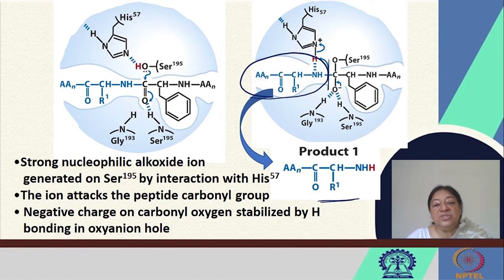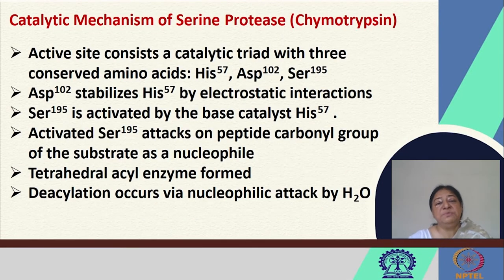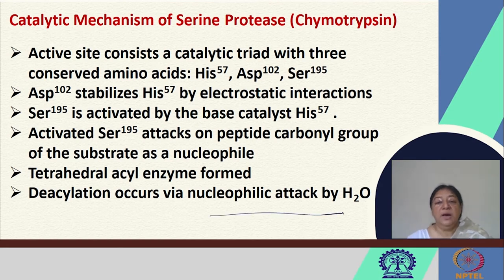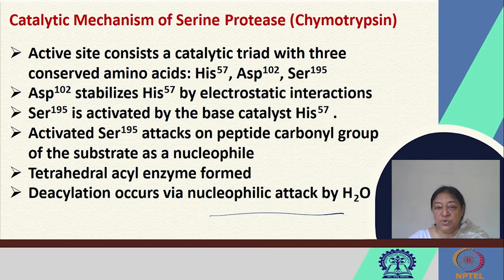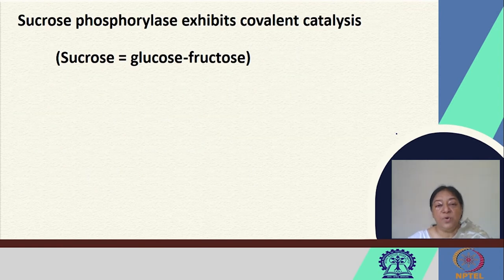The catalytic triad highlights the importance of orientation, connection, and acid-base catalysis. In covalent catalysis, a covalent linkage is formed and subsequently broken — brought about by hydrolysis or attack by water. The active site of the serine protease chymotrypsin has a catalytic triad of histidine-57, aspartate-102, and serine-195, each with their own roles to play in the catalytic reaction.